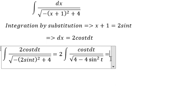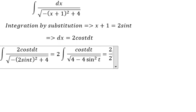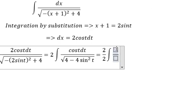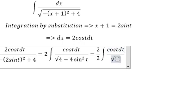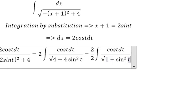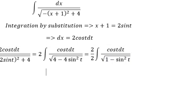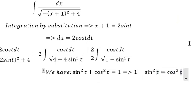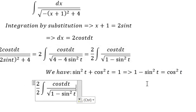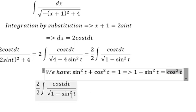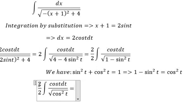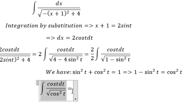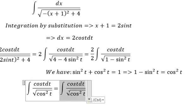We take the square root of 4 outside, which gives number 2. We have 2 over 2 times cos t dt, and inside the square root we have 1 minus sine squared t. Using the identity, 1 minus sine squared t equals cos squared t. We simplify 2 over 2, and cos t over the square root of cos squared t simplifies to cos t, leaving us with the integral of dt.